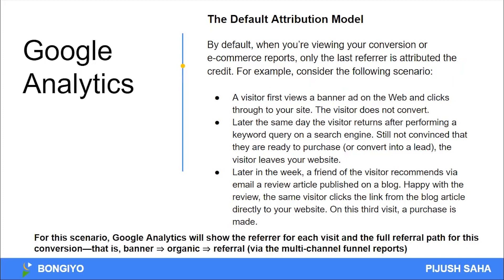Let's go to the next topic. We will cover a basic topic about Google Analytics — the attribution model. The attribution model is the most important in Google Analytics. By default, when viewing your conversion or e-commerce reports, only the last referrer gets the credit. For example: a visitor first views a banner ad and clicks through to your website but does not convert. Later that same day, the visitor returns after a keyword search but is still not ready to purchase. Later in a week, a friend recommends a blog review via email, the visitor clicks through and on this third visit, a purchase is made.